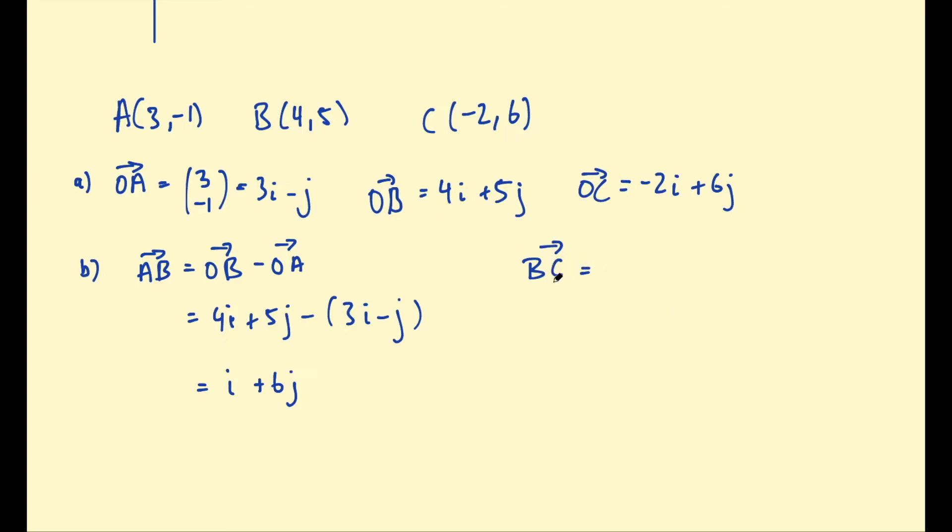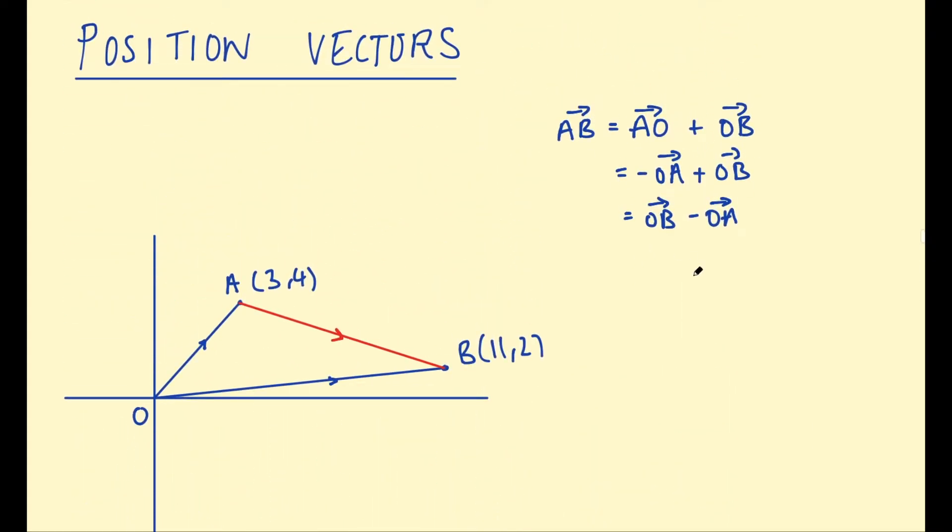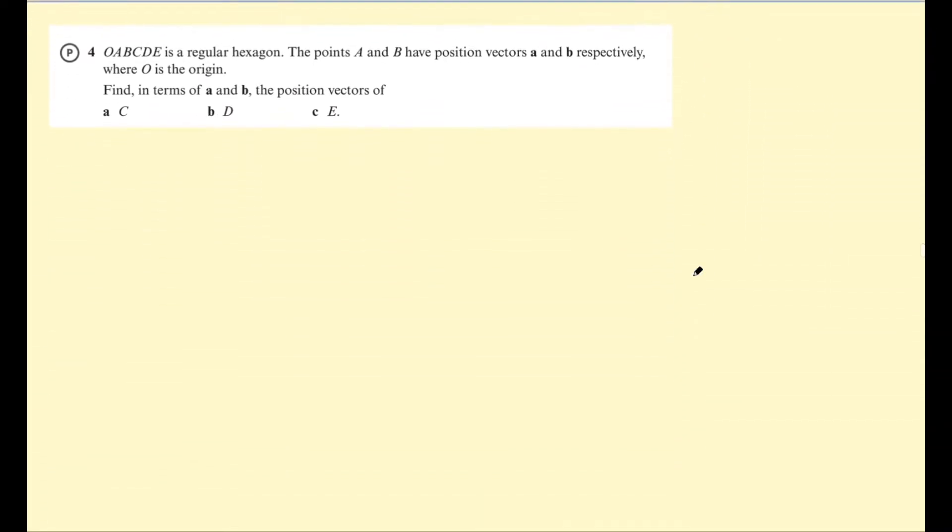Then we might want to also find BC. So BC—remember we're going from B to C—so we're going to do OC subtract OB. And then just pretty straightforward arithmetic from this point on. So -2i + 6j subtract (4i + 5j). I always put brackets around the second one just so I don't mess up with any negatives. So that's -6i and 6 take 5 is plus j. Okay, so that's how you're working with this formula.